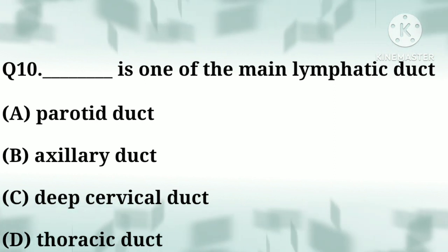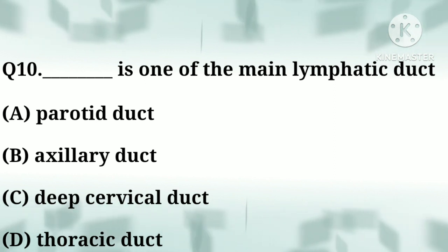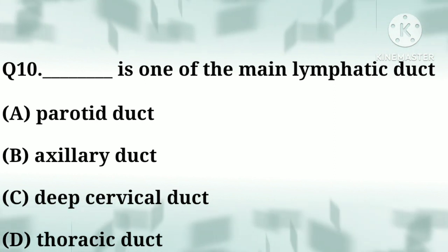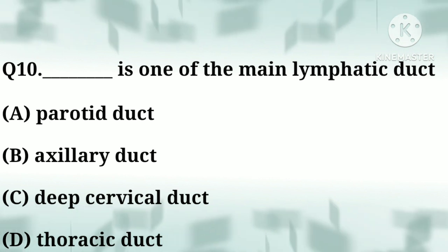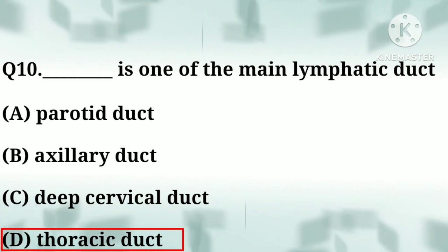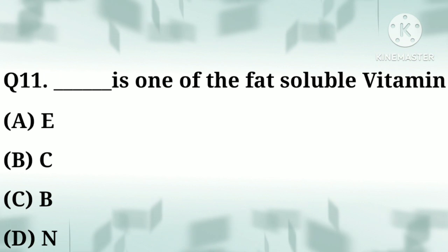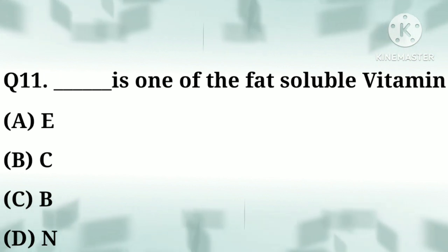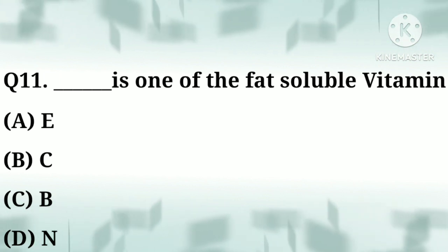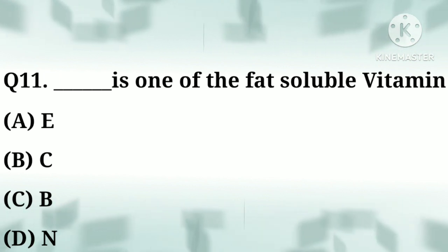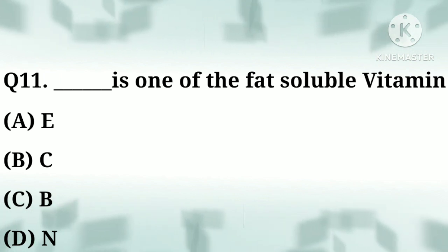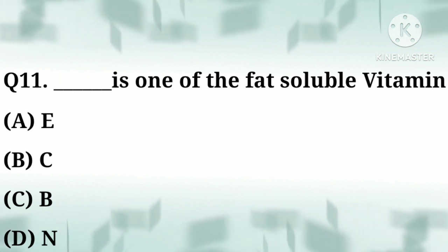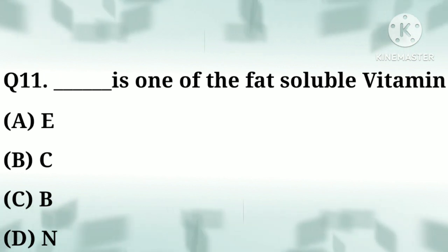Option A: periosteal duct, option B: axillary duct, option C: deep cervical duct, option D: thoracic duct. Correct answer: option D, thoracic duct. Question number eleven: blank is one of the fat-soluble vitamins — option A: E, option B: C, option C: B, option D: N.